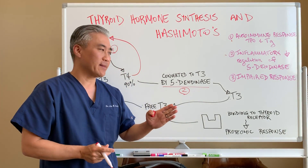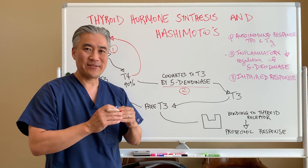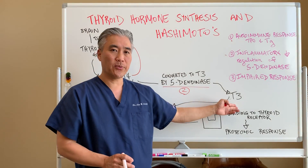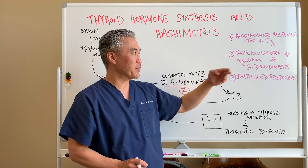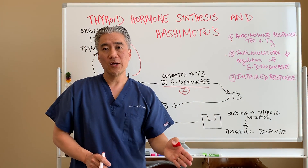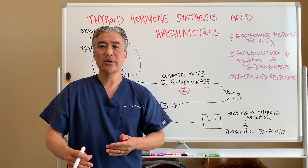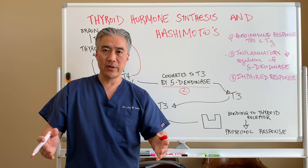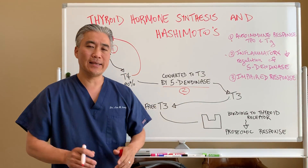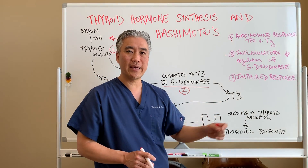Therefore, you cannot — or will not efficiently — convert T4 to T3 because of the inflammatory load of the autoimmune disease itself. Or if you have a pathogen, a virus, or anything that creates inflammation in your system, it can impact this 5-deiodinase enzyme and you will have low T3 as a result.